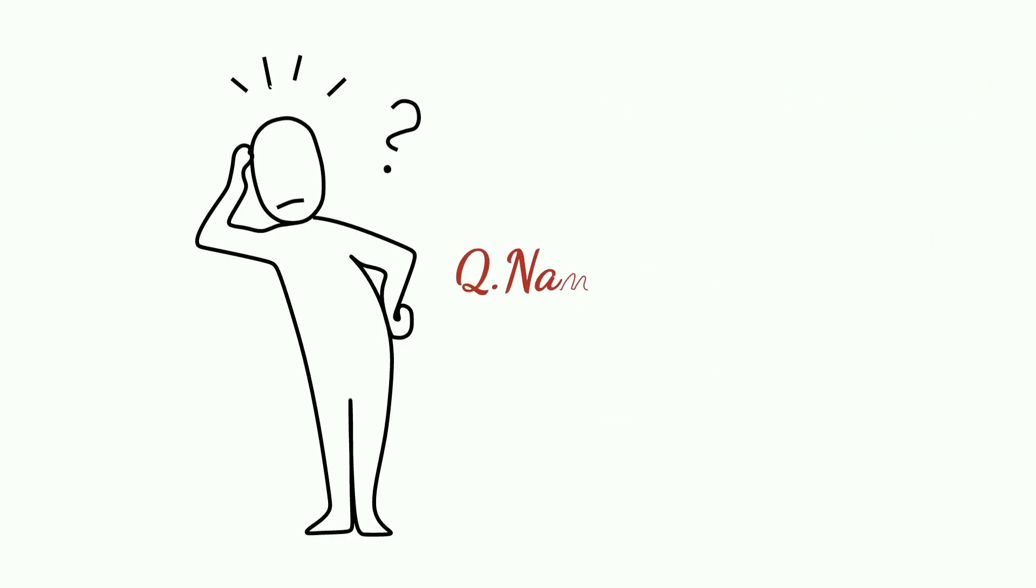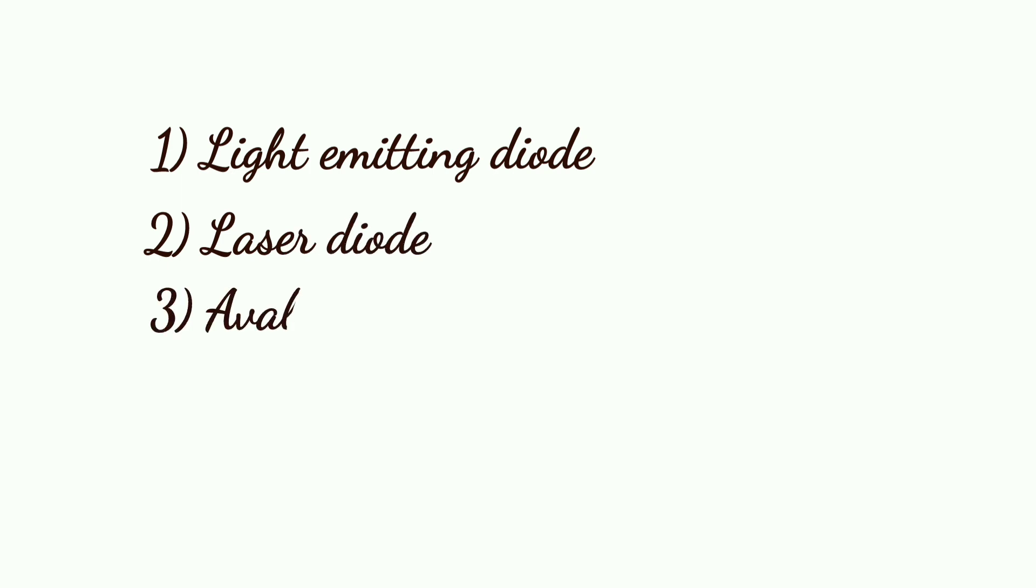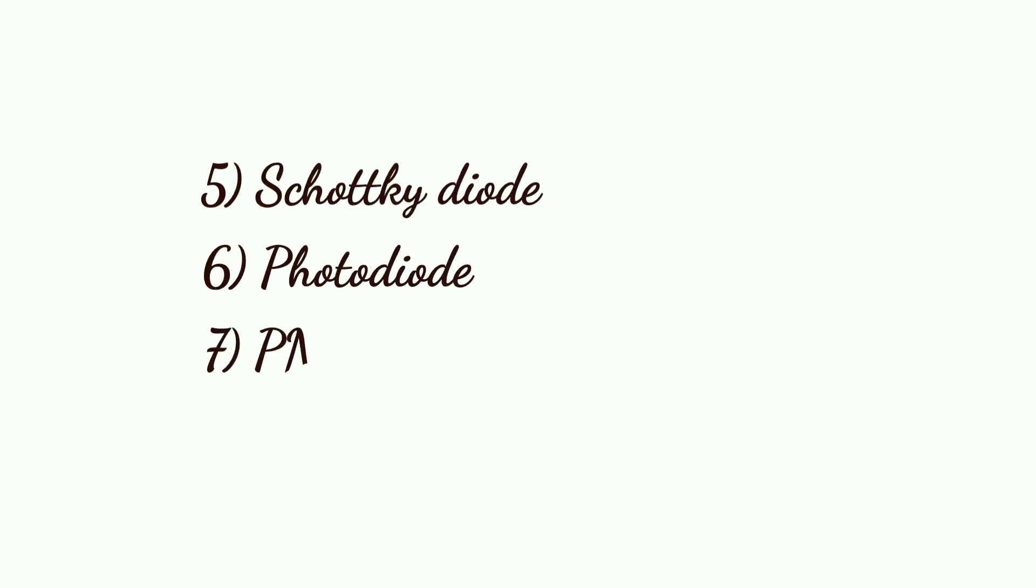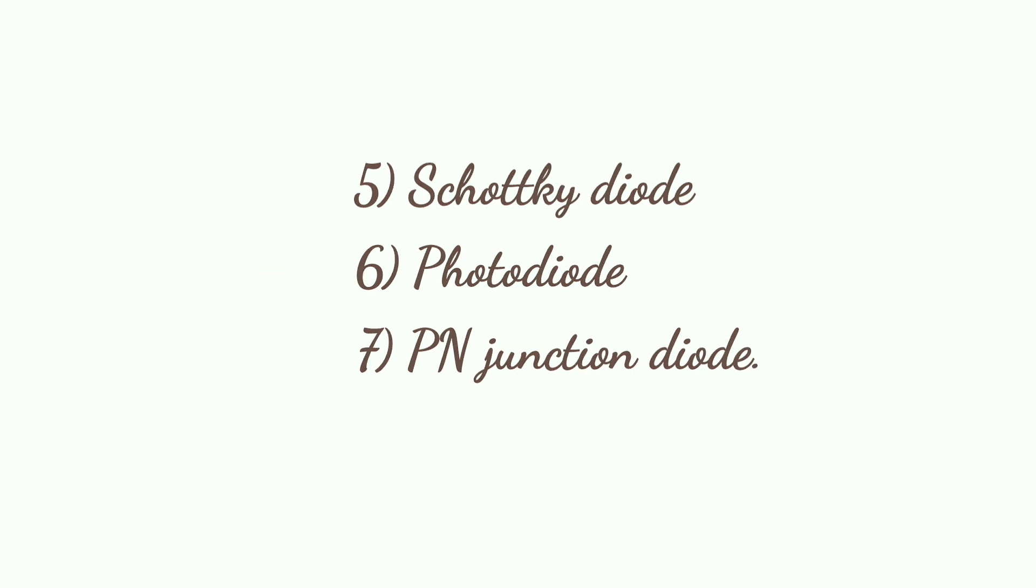Next question: Name the type of diode. First is Light Emitting Diode, second Laser Diode, third Avalanche Diode, fourth Zener Diode, fifth Schottky Diode, sixth Photo Diode, and seventh is PIN Junction Diode.